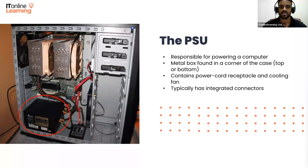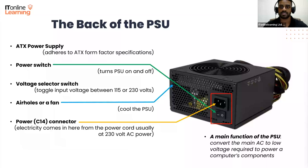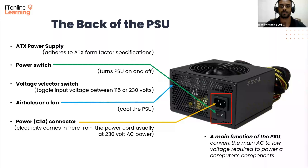Let's take a look at the back of a power supply. This is a typical ATX power supply — ATX tells us that the power supply conforms to the ATX form factor specifications. We're looking at the back panel, which is the part exposed when it's installed in the computer case. Here you'll typically see a power switch that turns the power supply on and off. You may also see a voltage selector switch used to toggle the input voltage between 115 and 230 volts. Some power supplies automatically switch between voltages, eliminating the need for that switch.